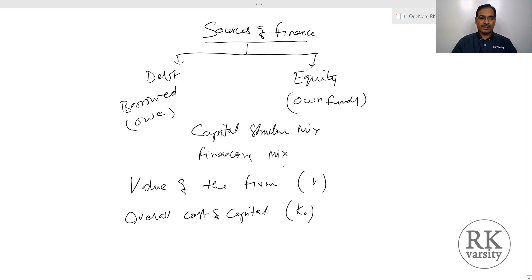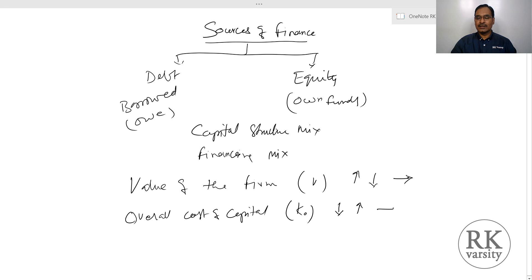If in a capital structure or financing mix, debt is used along with equity, then what is going to happen with the value of the firm? Whether the value of the firm increases, decreases, or remains constant. Similarly, what will be the impact on overall cost of capital — whether it will decrease, increase, or remain constant?